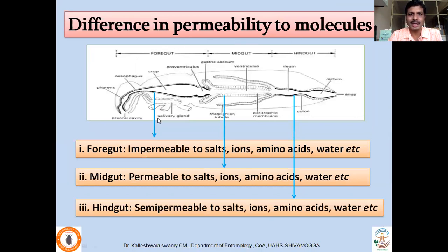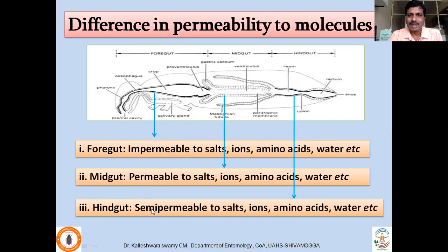There is a difference in permeability across the three gut regions. The cuticular intima in the foregut is completely impermeable to salts, ions, amino acids, and water. The midgut is permeable to salts, ions, amino acids, water, and digested products, enabling digestion and absorption. The cuticular intima in the hindgut is semi-permeable — unlike the completely impermeable foregut intima — allowing selective absorption of useful substances like salts, amino acids, and water into the haemocoel before excretion.